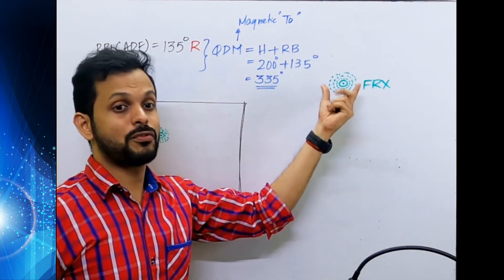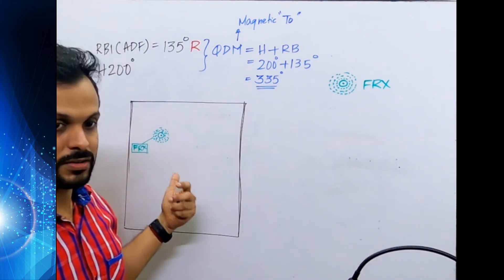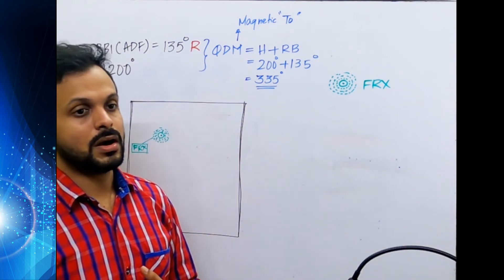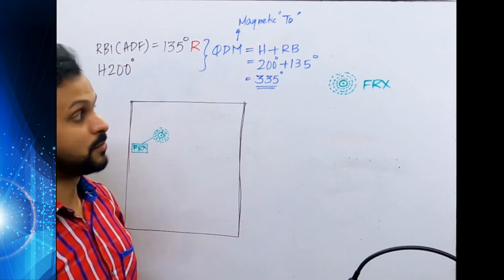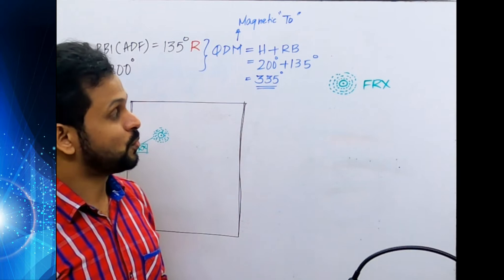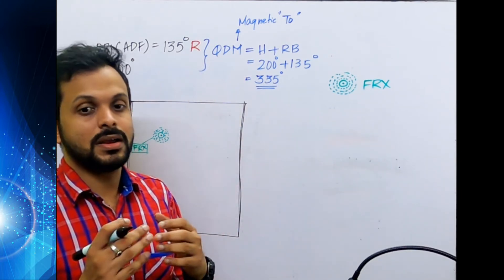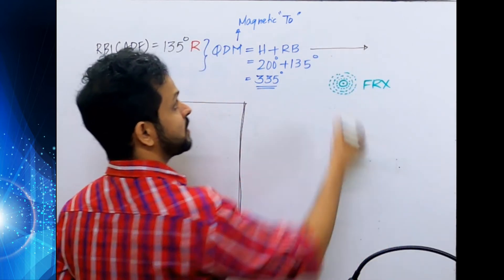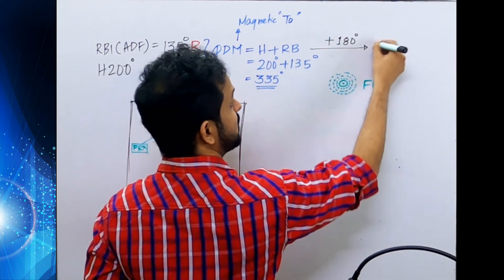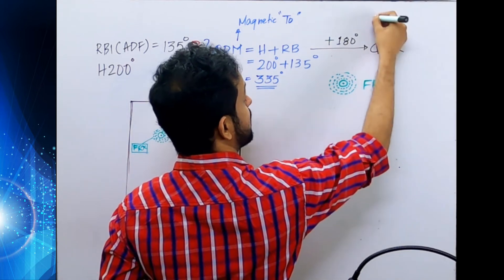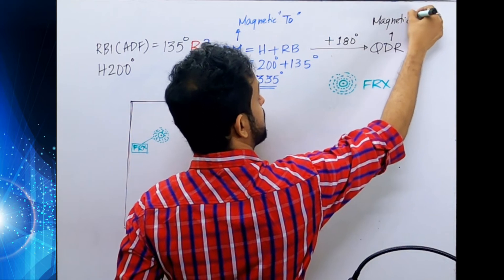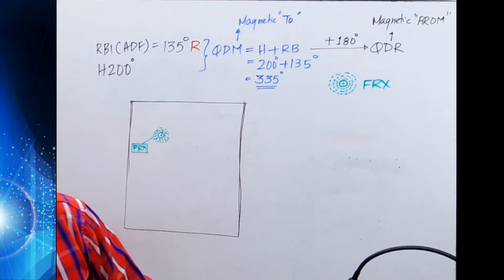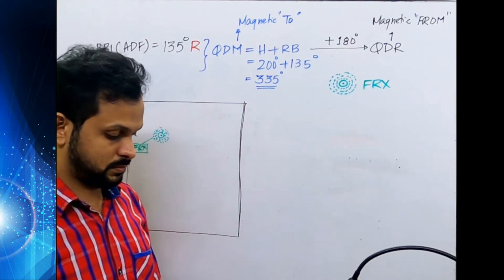What I have is the navigation aid, not my aircraft position. So practically, I need not the QDM but the magnetic bearing from the station, not to the station. We can deduce that: take the reciprocal of the QDM by adding or subtracting 180 degrees to get the QDR. QDR is the magnetic bearing from the station. 335 minus 180 equals 155 degrees. This 155 degrees is the track from the station - that's the QDR.